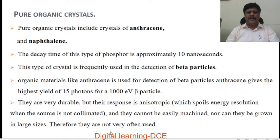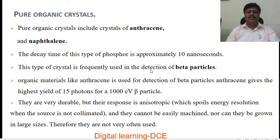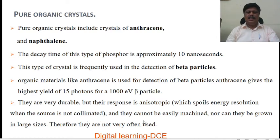There are three types of organic scintillators. Pure organic crystals include anthracene and naphthalene. The decay time of this type of phosphor is approximately 10 nanoseconds. This type of crystal is frequently used in the detection of beta particles. Anthracene gives the highest yield of 15 photons per 1000 electron volt beta particle. They are very durable but their response is anisotropic, which foils energy resolution when the source is not collimated, and they cannot be easily machined nor grown in larger sizes. Therefore, they are not very often used.